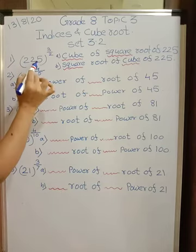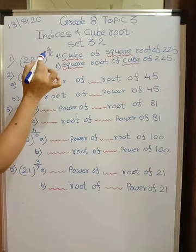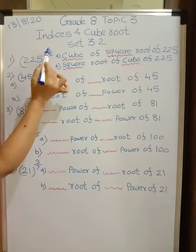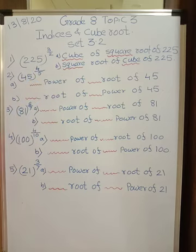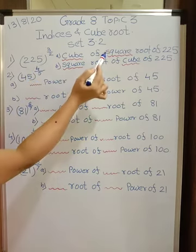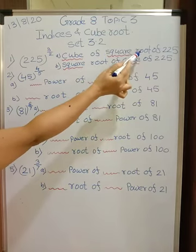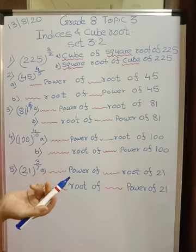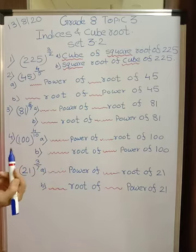Now index here everywhere is in rational form. See the index of 225, the power, is 3 upon 2. So 3 will be power and 2 will be root. It can be written in two ways. First we can write power and then root, or first root and then power.